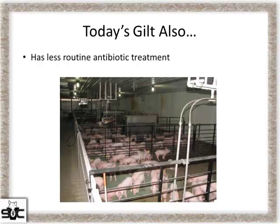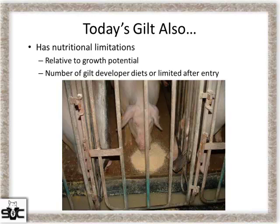Today's gilt has less antibiotic treatment — part of that is the change from VFDs. As we talk about how we acclimate gilts, when we have bacterial pathogens causing arthritis and joint infections, less antibiotic use allows that to take over more and can lead to more chronic issues we see later. I would also say today's gilt has nutritional limitations. A faster-growing gilt probably has nutritional needs we haven't yet fully understood, so we likely don't feed the gilt right relative to its growth potential.